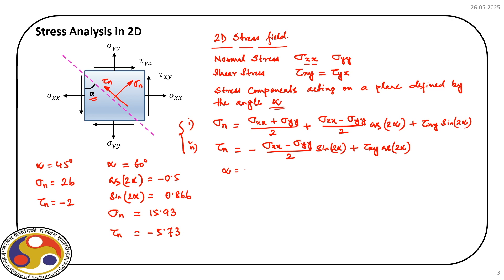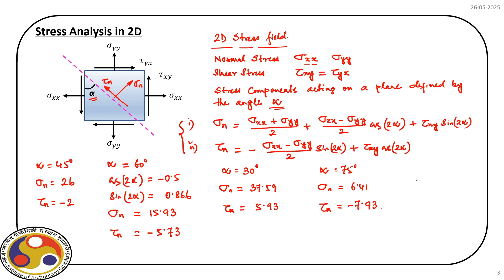Similarly, for alpha = 30°, sigma_n = 37.59 and tau_n = 5.93. For alpha = 75°, sigma_n = 6.41 and tau_n = −7.93. I leave this as a home task — please verify these values using the two equations, with sigma_xx = 20, sigma_yy = 16, and tau_xy = 8.